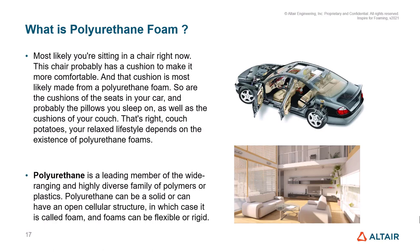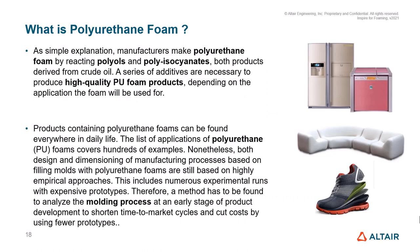Polyurethane is a leading member of a wide range and highly diverse family of polymers or plastics. It can be solid, it can be an open cellular structure, it can be flexible or rigid. Polyurethane foam is manufactured by reacting polyols and polyisocyanates, both derivatives of crude oil. A variety of additives are added to the mixture to produce high-quality PU foams, depending upon the application.